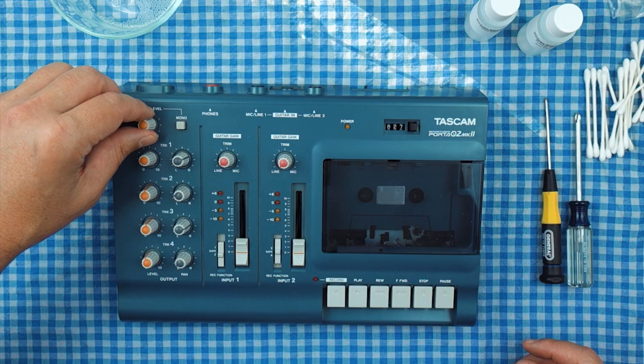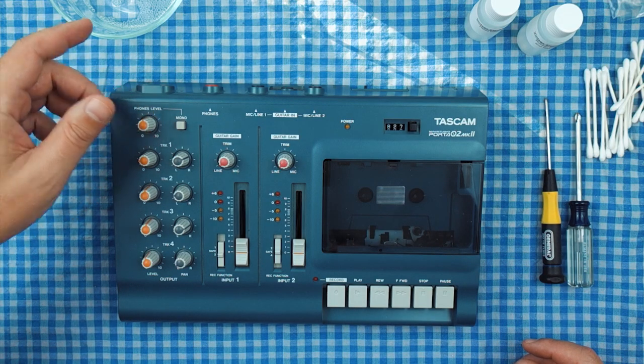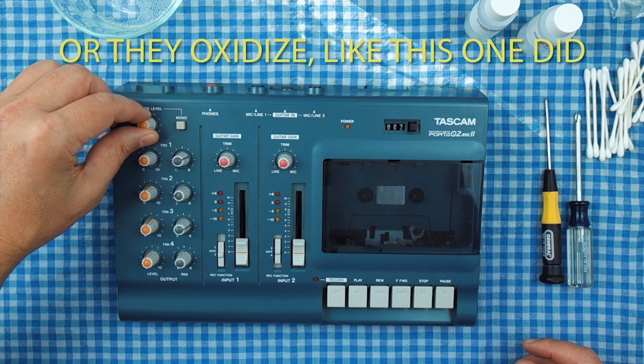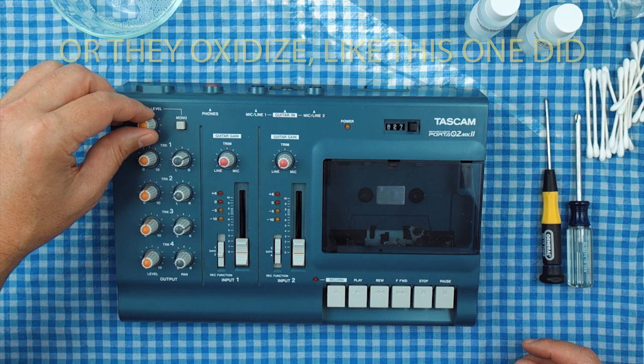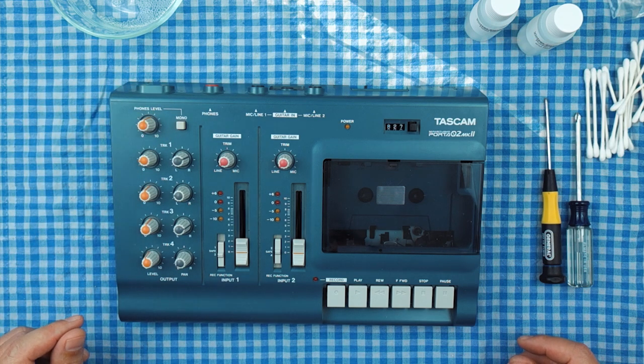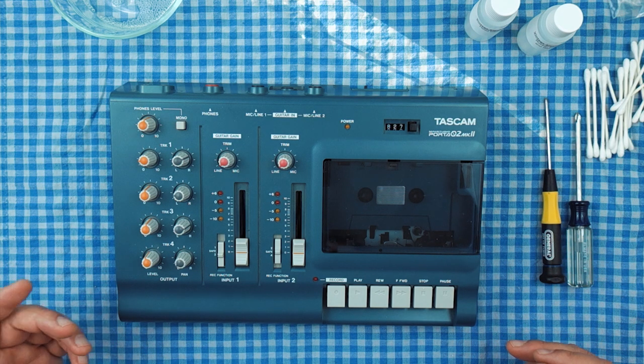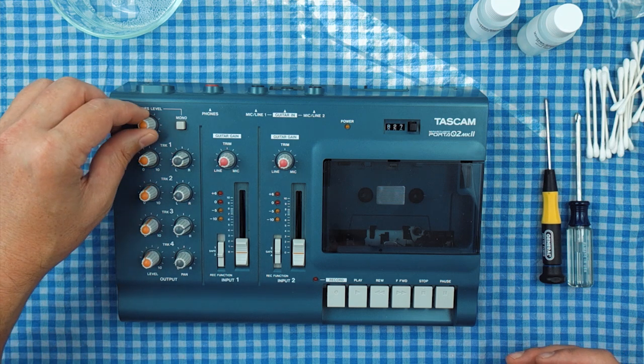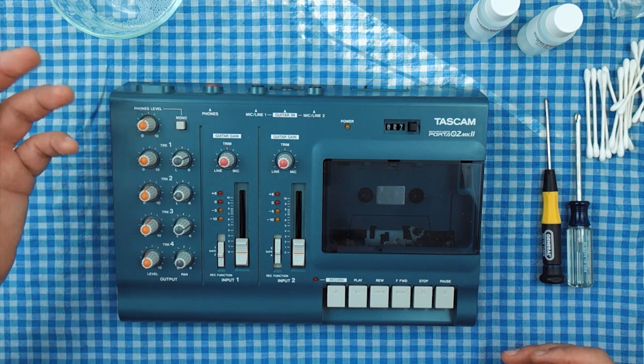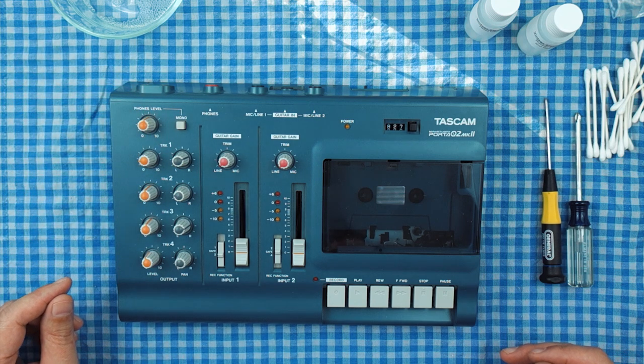What happens is they get like dirt or dust or something inside of the potentiometer and then when you turn this it'll make really loud pops in your ears. So you can buy these things really cheap actually and people who sell these sometimes, they sell them cheap because they say oh it pops and crackles and they think it's like a problem and it's hard to fix, it's actually really not hard to fix at all.